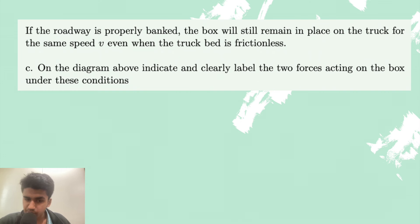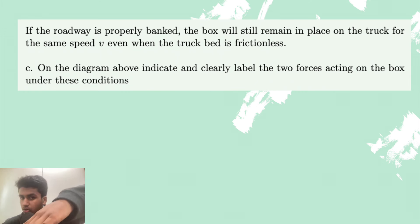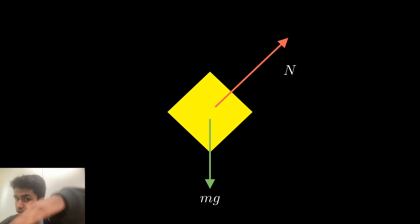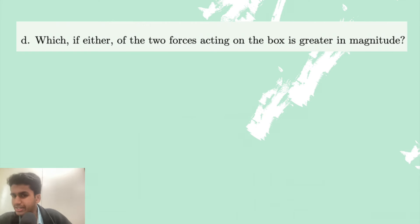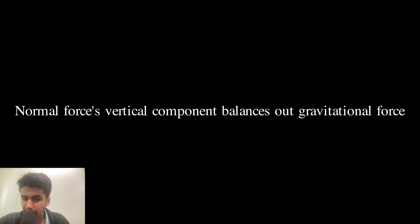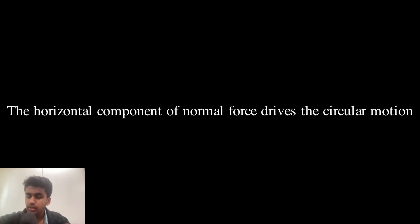If the roadway is properly banked, the box will still remain in place on the truck for the same speed v, even when the truck bed is frictionless. If the roadway is banked, there will be a normal force. Since it's banked, it's on an angle and the normal force always points perpendicular to the surface. So if the car is at this angle, the normal force is also at an angle and gravitational force is downwards. There must be no motion in the y direction, meaning the vertical component of normal force must balance out gravitational force. Since just one component of normal force equals gravitational force, there will also be a horizontal component of normal force that drives the circular motion. Clearly, the normal force will be larger in magnitude.